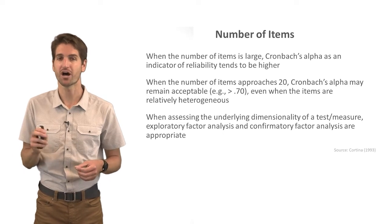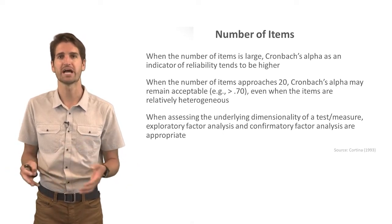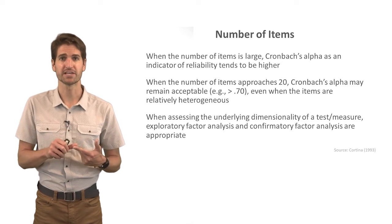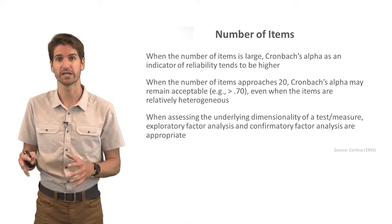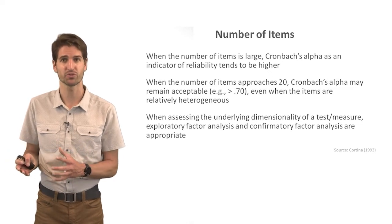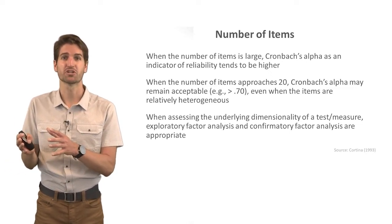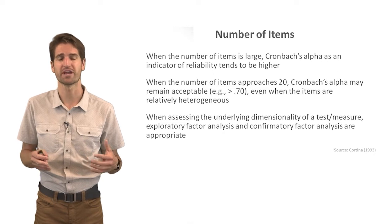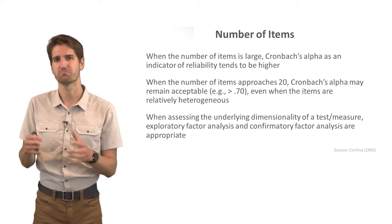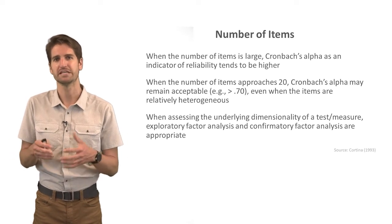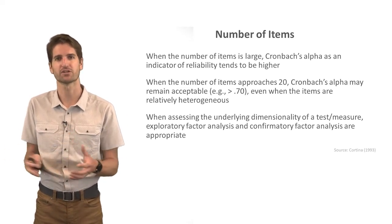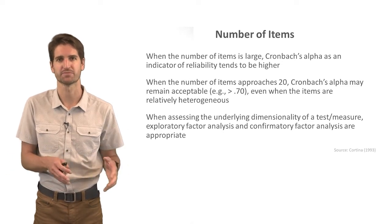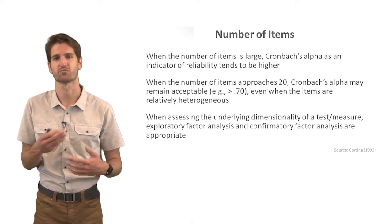However, this should be used cautiously — adding too many items leads to survey fatigue. Also, as found in a study by Jose Cortina published in 1993, when the number of items approaches 20, Cronbach's Alpha may remain acceptable (0.7 or higher) even when items are not that consistent with each other. So try to avoid measures of 20 or more items. This is where factor analysis comes in — to determine which items best cover the construct space without being redundant with one another.